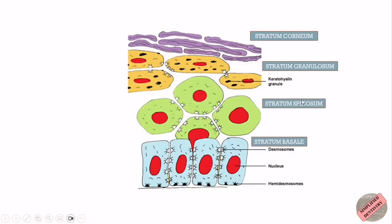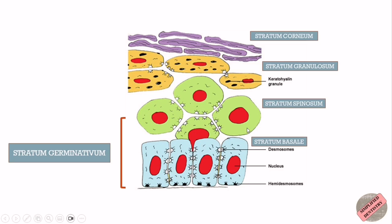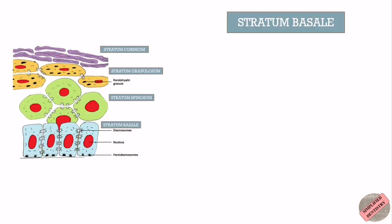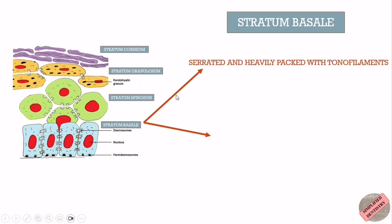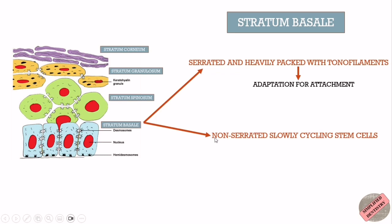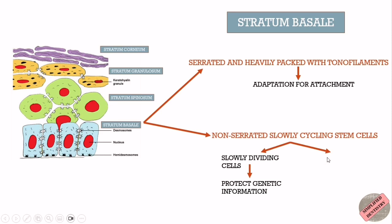Some spinous cells just above the basal cell layer also show mitotic figures, and this combination of basal and suprabasal cells containing mitotic figures is called stratum germinativum. However, it should be kept in mind that even if the spinous layer contains mitotic figures, it is only the basal cell layer that can undergo cell division. The basal cells are made up of two populations: one is serrated and heavily packed with tonofilaments for attachment, and the other is non-serrated and composed of slowly cycling stem cells, which give rise to slowly dividing cells that protect genetic information and amplifying cells that increase cell numbers for maturation.